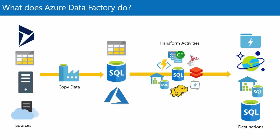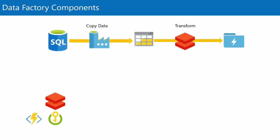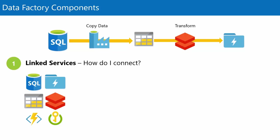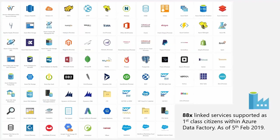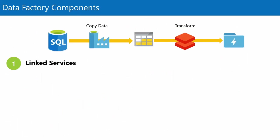Looking at the components within Data Factory needed to achieve this orchestration — the first is linked services. This is the information about how we connect to whatever we want to work with. For a SQL database, the linked service contains the connection string information, username, password, database — the normal stuff. This is very much like our SSIS connection manager. Data Factory now boasts 88 linked services to various things supported as first-class systems. There is even an Access database icon on there, which I think we should all avoid.